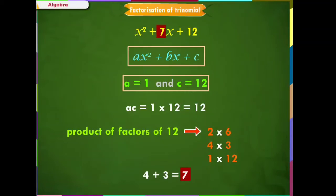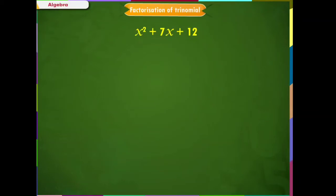Therefore, our expression can be written as x² + 7x + 12 = x² + 4x + 3x + 12. Now, we can group the first two terms and the last two terms.